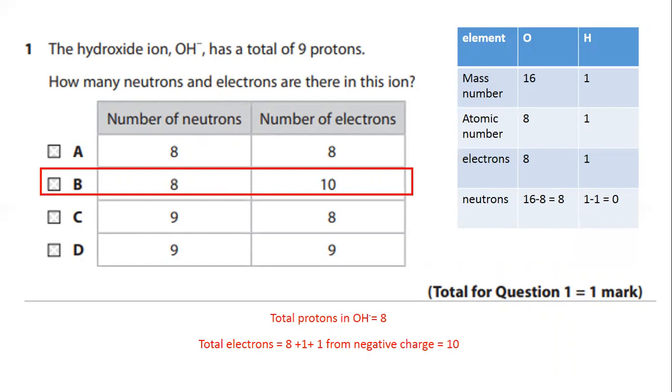The hydroxide ion has a total of 9 protons, that means 9 positive charges, and it says the ion is OH- having 1 minus charge. So the total number of electrons on this ion should be 1 plus number of protons, so it gives you 10. The only answer which gives 10 number of electrons here is B.